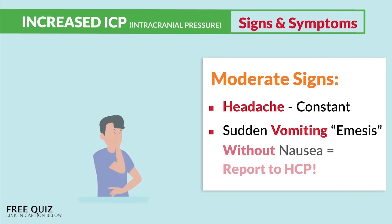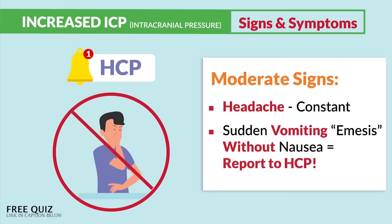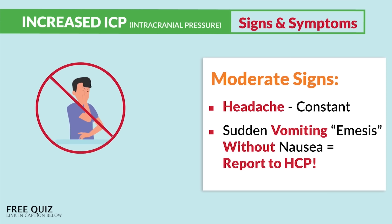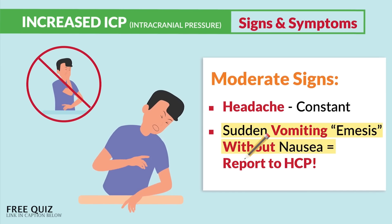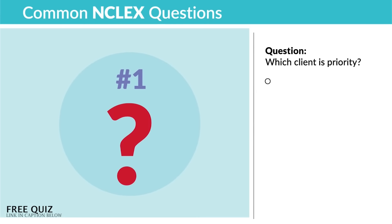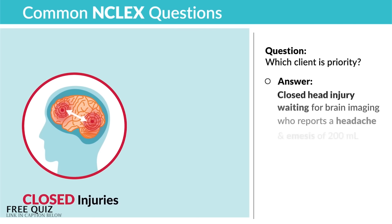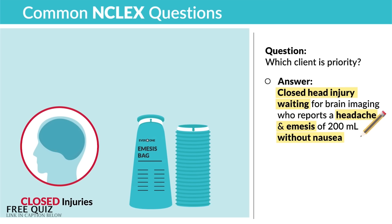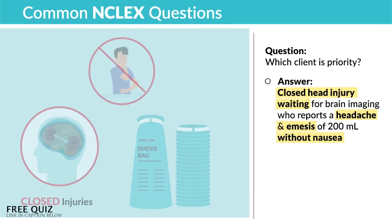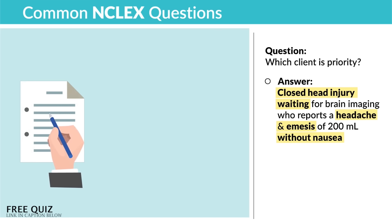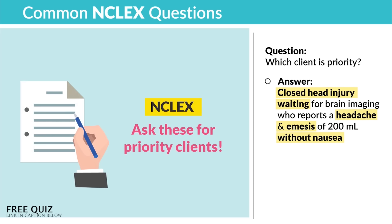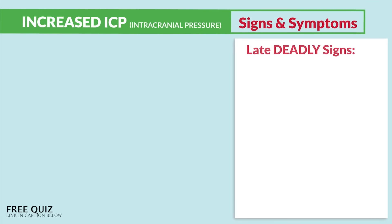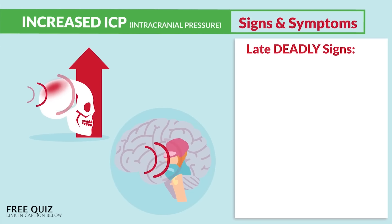For moderate signs, we see a constant headache, and then another key term: sudden vomiting — that emesis — without nausea. We must report this to the HCP or provider. Vomiting without nausea is a big key term mentioned by various exams and NCLEX question banks. A common NCLEX question asks which client is priority — it's typically the one with a closed head injury reporting a headache and emesis of 200 mls without nausea. Emesis without nausea is typically a priority finding.